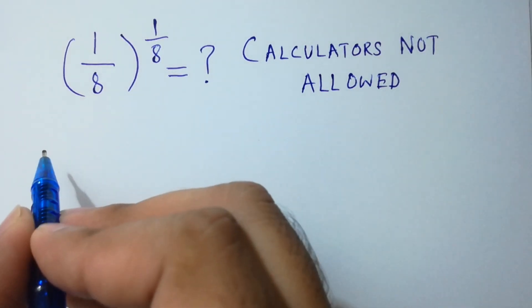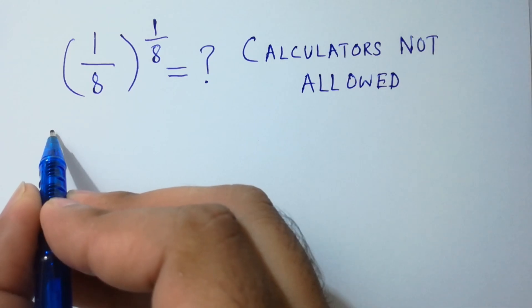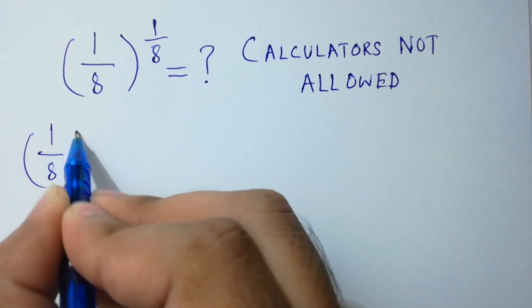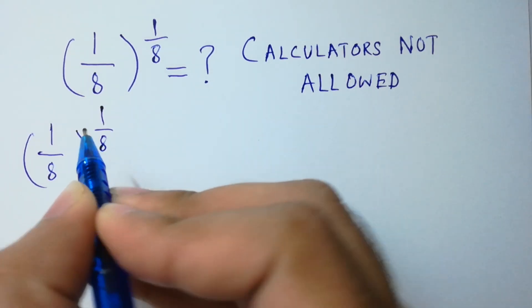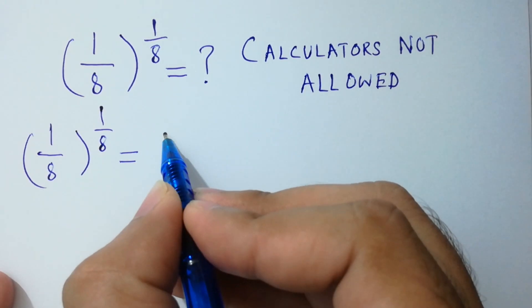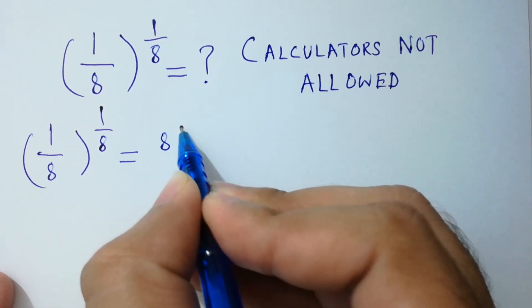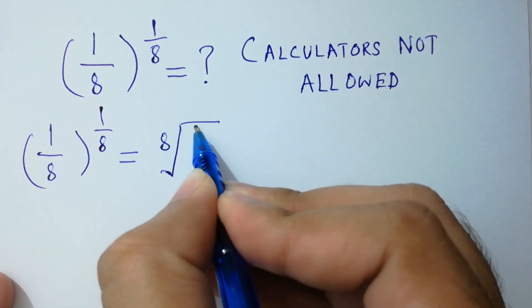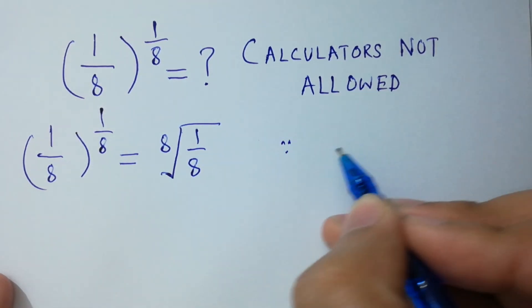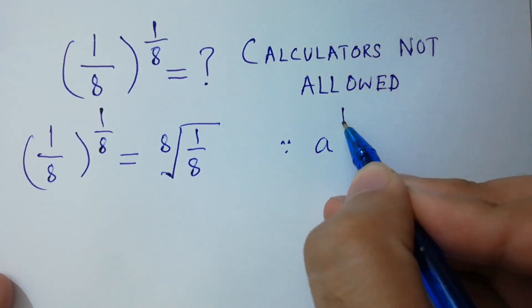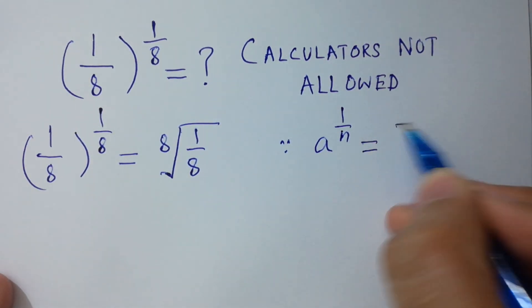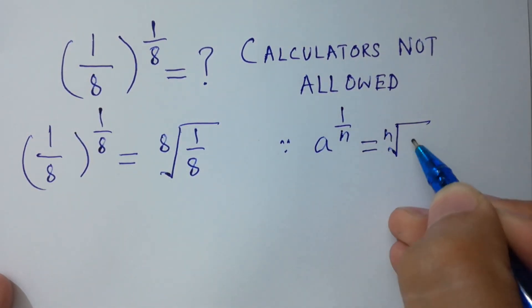We can write (1/8)^(1/8) as the 8th root of (1/8), since a to the power 1 over n equals the n-th root of a.